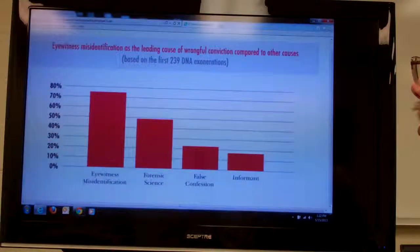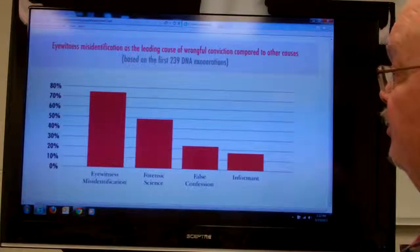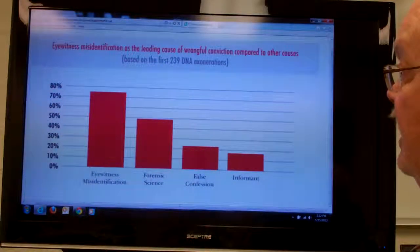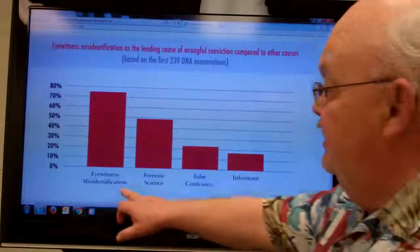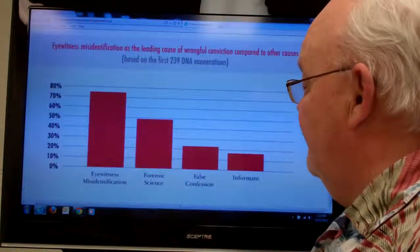Looking at the 239 DNA exonerations through the Innocence Project, they found eyewitness misidentification